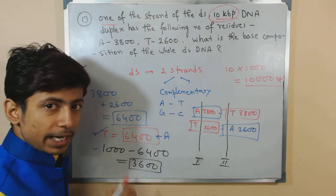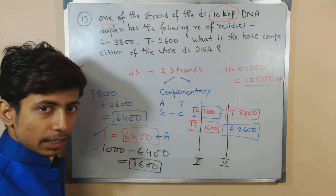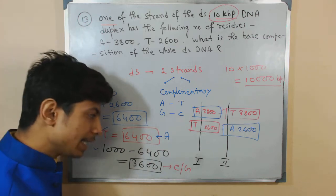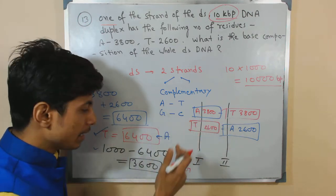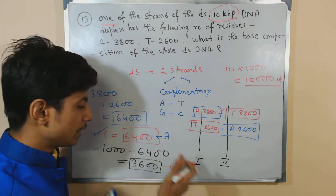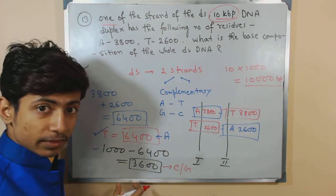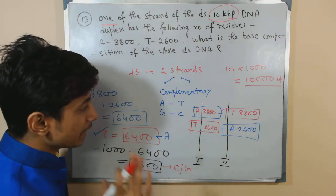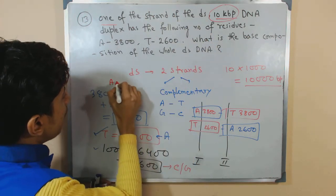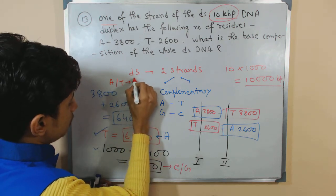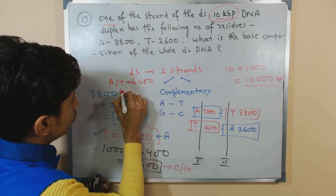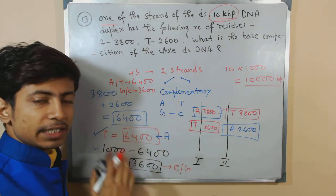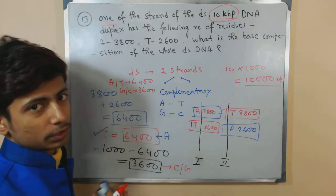The remaining 3600, among the total 10,000 base pairs, contributes to cytosine and guanine. Like thymine and adenine, cytosine and guanine will also be equal at 3600 each. So the answer for the whole composition of bases: adenine and thymine equal 6400, and guanine and cytosine equal 3600.